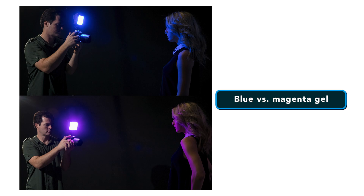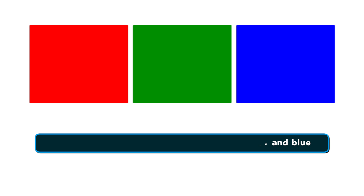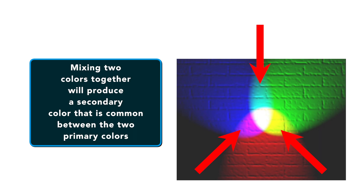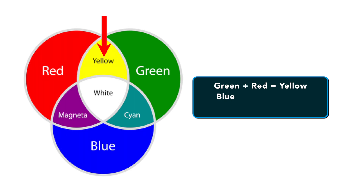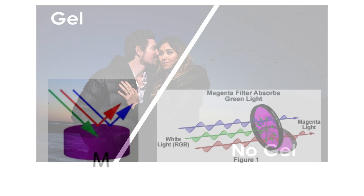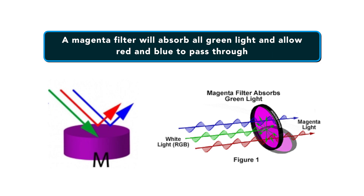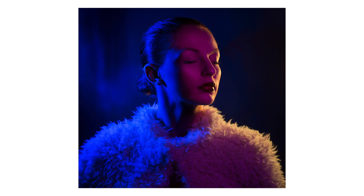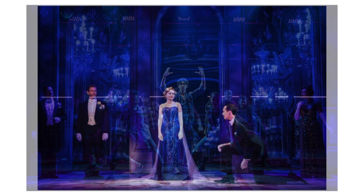Knowing a little bit about how light works can help you understand how using gels will affect your lights. Light has three primary colors: red, green and blue. Light is additive by nature, which means combining the three primary colors will produce white light, while mixing two colors will produce a secondary color common between the two. Combining green and red results in yellow; blue and green create cyan; blue and red make magenta. A gel filter works by absorbing a specific portion of the light — for instance, a magenta filter will absorb all green light and allow red and blue to pass through, and we see magenta. This is important to understand because using color gels can have interesting results with the colors in your scene, whether it's the paint on the wall or the wardrobe your talent wears.